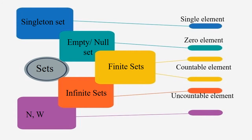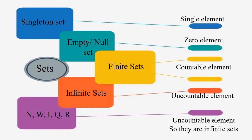The set of natural numbers, the set of whole numbers, the set of integers, the set of rational numbers, and the set of real numbers are all examples of infinite sets, because the elements contained in those sets are uncountable.